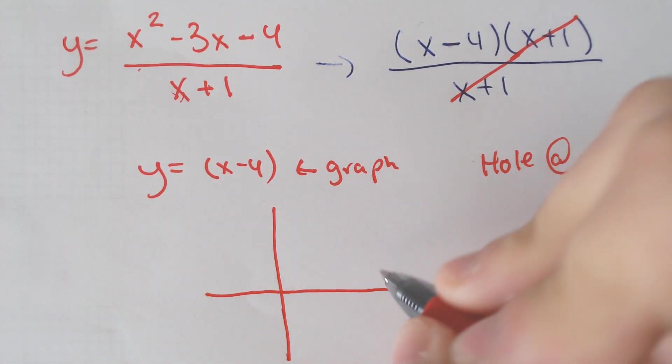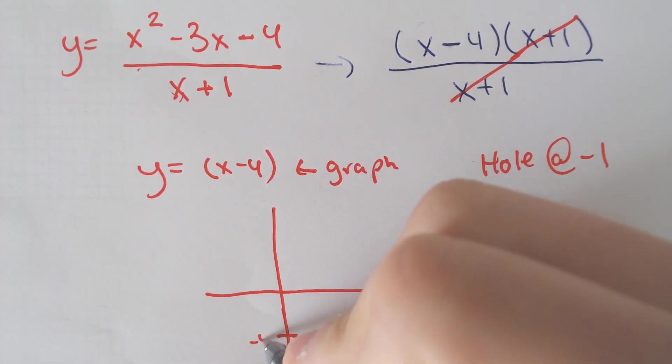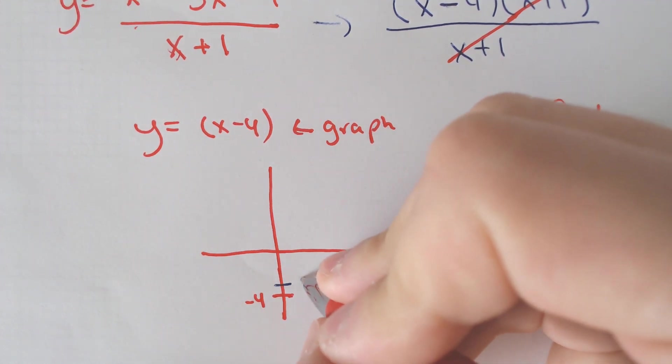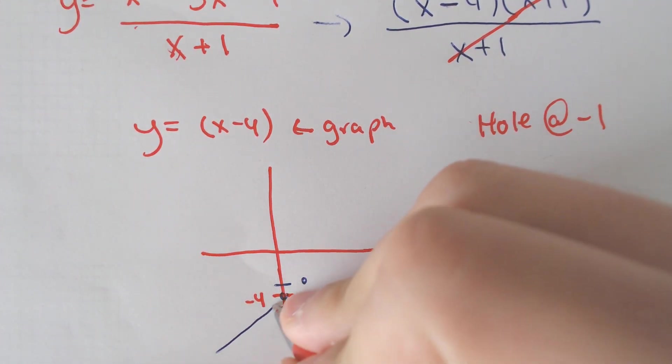It is a boring, boring line with a y-intercept of negative 4 and a slope of up 1 over 1, and it would look like this.